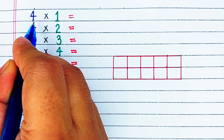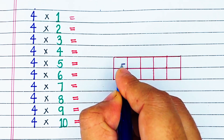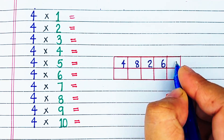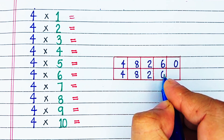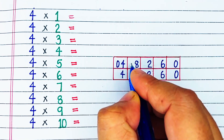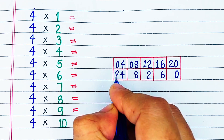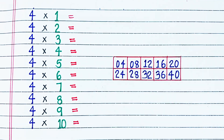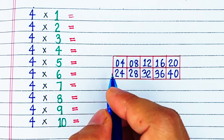Next, the maths trick for 4 times table. First, we will draw a 5 by 2 grid with 5 columns and 2 rows. For the first row, we will write 0, 0, 1, 1, 2 in the tenth digit place. For the second row, we will write 2, 2, 3, 3, 4 in the tenth digit place. So, this forms our 4 times table.